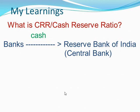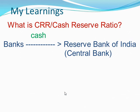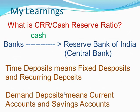The banks are required to keep a certain portion of their deposits in the form of cash with the Reserve Bank of India. The CRR, or Cash Reserve Ratio, represents the percentage of the total amount of time and demand deposits that the banks have to keep with the central bank of the country. For example, if CRR is 5%, it means that the banks need to keep 5% of the total time and demand deposits as a cash reserve with the central bank.